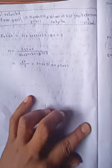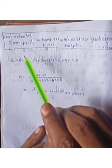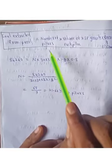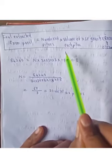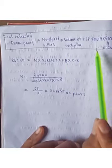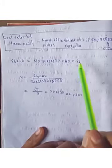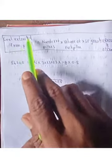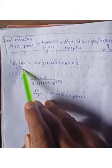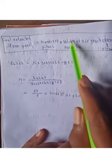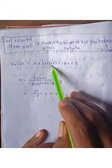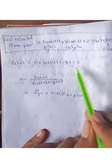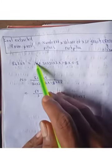The coal extracted from the panel equals the number of pillars (N) in that panel, multiplied by the volume of each pillar, multiplied by the specific gravity of coal, multiplied by the recovery of coal. All data is given; we just have to find the number of pillars. So 84,240 = N × (l × b × h) = N × (30 × 30 × 3), specific gravity is 1.8, and recovery is 0.8.